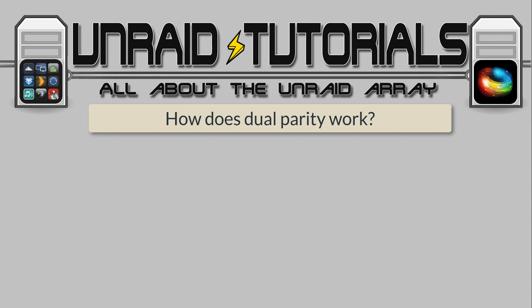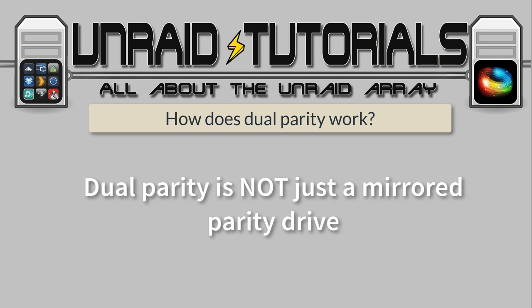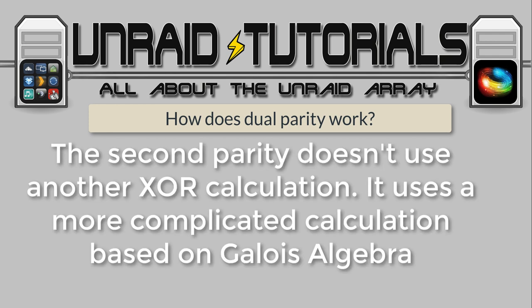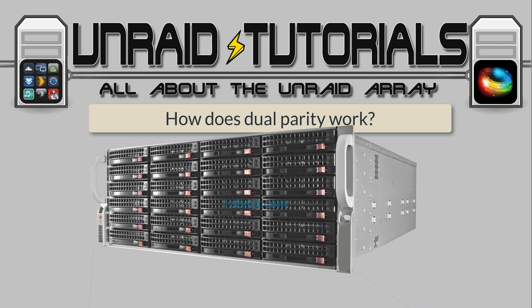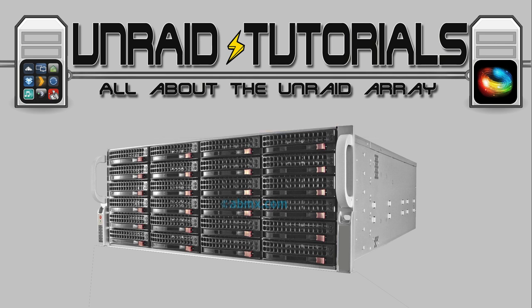So that's how single parity works. In Unraid we can actually have two parity drives. Some people say that the second parity drive is just a mirrored copy of the first, only good if a parity drive fails — this is not true. Dual parity will actually allow for two data drives to fail in the array and still be able to rebuild from that. The second parity drive uses another more complex calculation based on Galois field algebra. With this additional parity calculation on top of the first XOR parity calculation, two drive failures can be tolerated. Dual parity is especially useful for large arrays with multiple drives, as there is more chance of two drives failing.